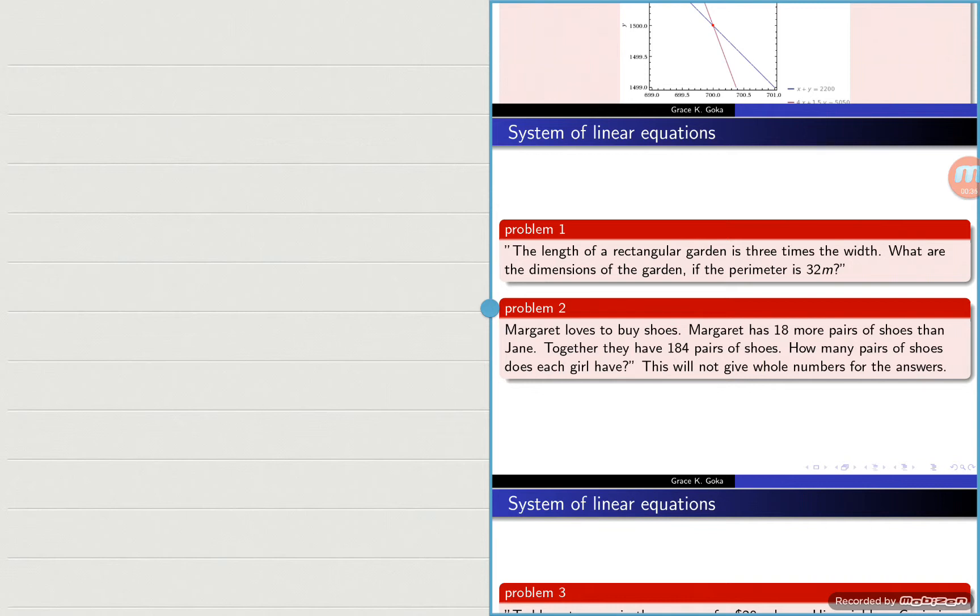So what do we know so far? We know that it's a rectangular garden. We've been given the dimensions, which is the length and the width, and we've also been given the perimeter of the garden.